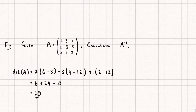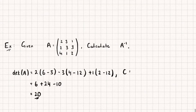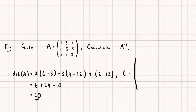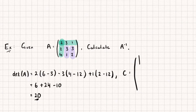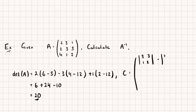From here we're going to find our cofactor matrix. Remember, the top left element of our cofactor matrix is what we get when we eliminate the rows and columns of our top left element of matrix A and find the determinant of what's left. So it's going to be the determinant of 3, 3, 1, 2. Remembering the signs — the next one is going to be negative, so negative the determinant of 2, 3, 4, 2. And then finally, the determinant of 2, 3, 4, 1.